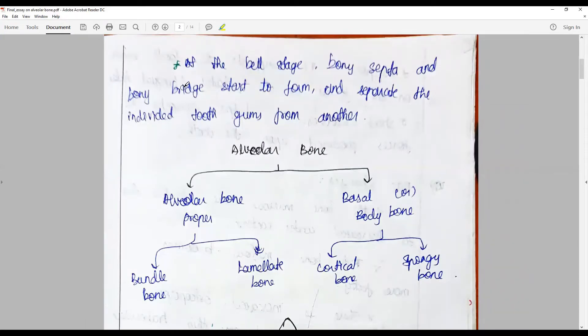At the bell stage, bony septa and bony bridge start to form. At the bell stage of tooth development, surrounding bony septa and bony bridge begin to form and separate the individual tooth from another. This is the key point.